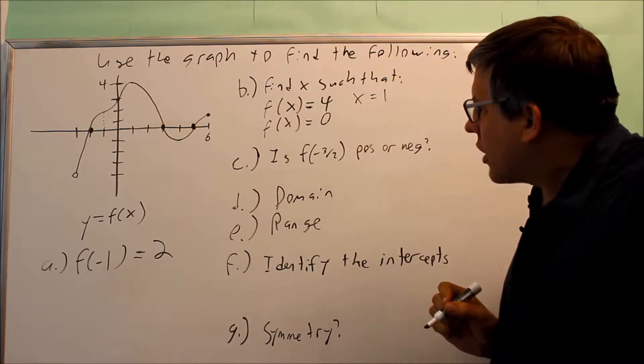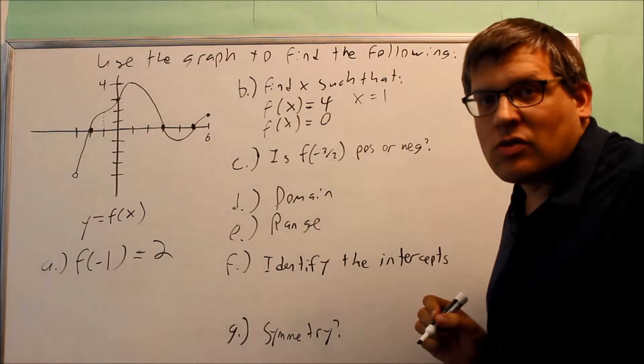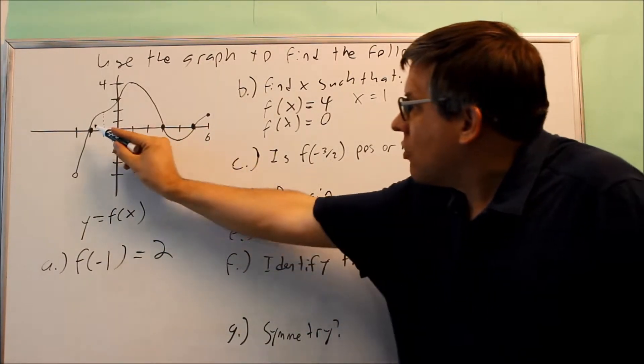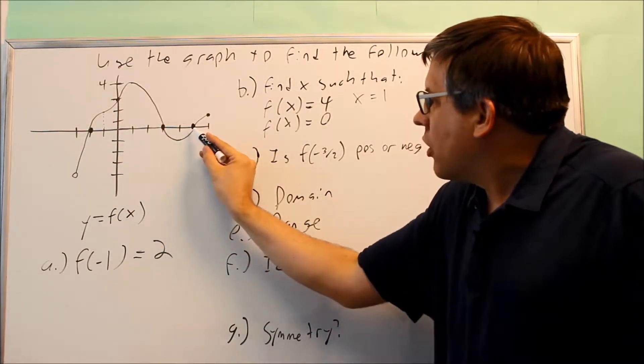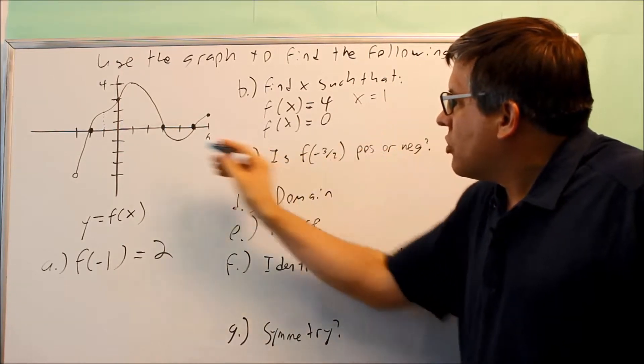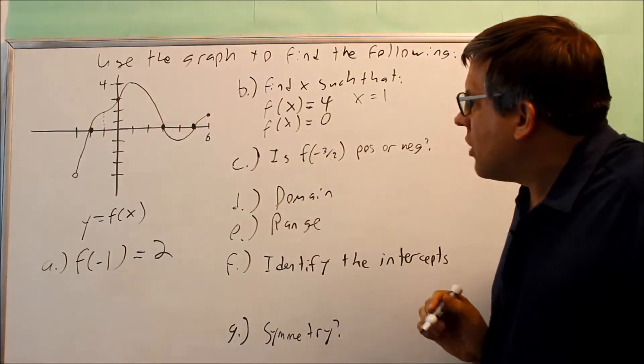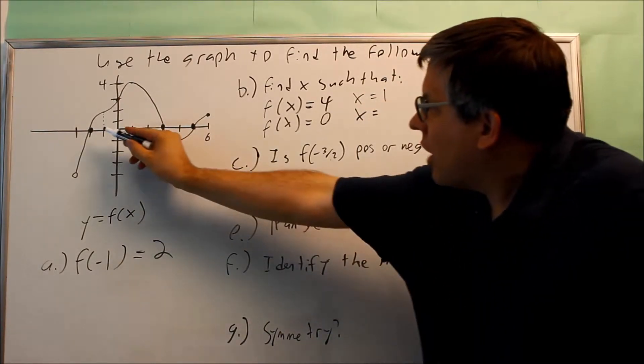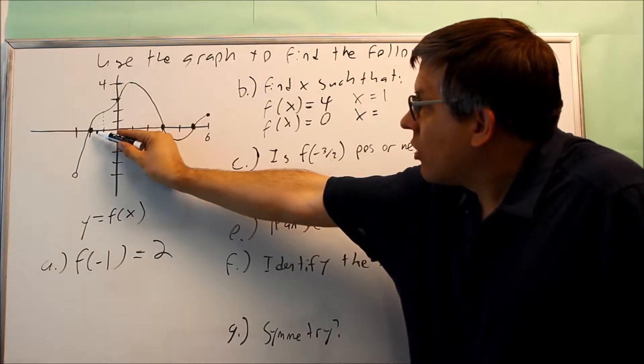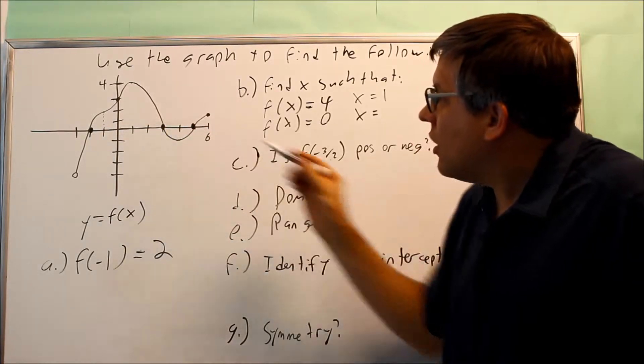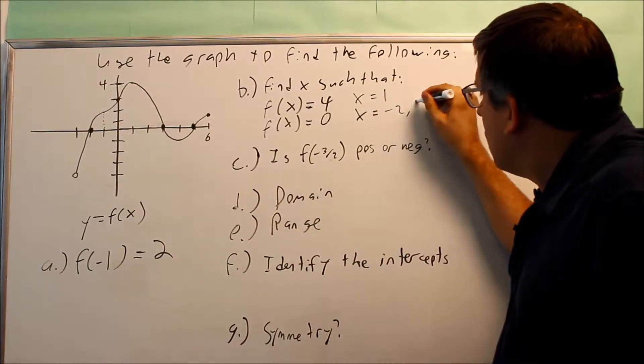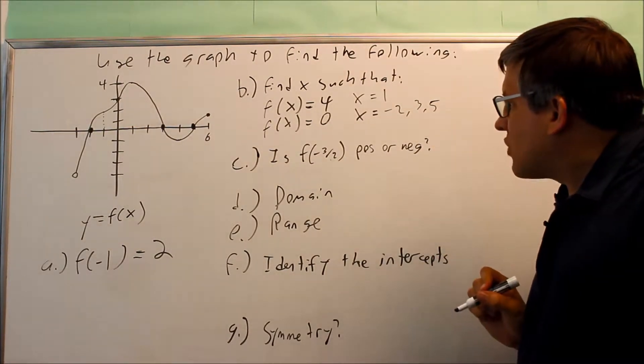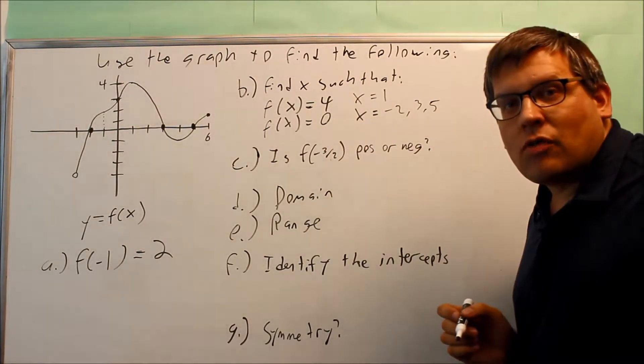Then I want to find out what x value gives me a y value of 0. That's asking us to find the x-intercepts. So if I look at this, every place where the y value is 0, that actually occurs at these spots right there. So I'm just going to indicate all the different numbers. Negative 2 is where it will cross the x-axis at 3 and 5. So negative 2, 3, and 5, I'm just going to separate those with commas. And these three x values will give me a y value of 0.